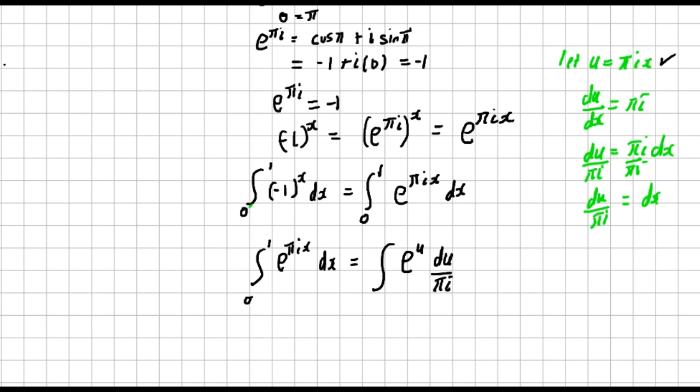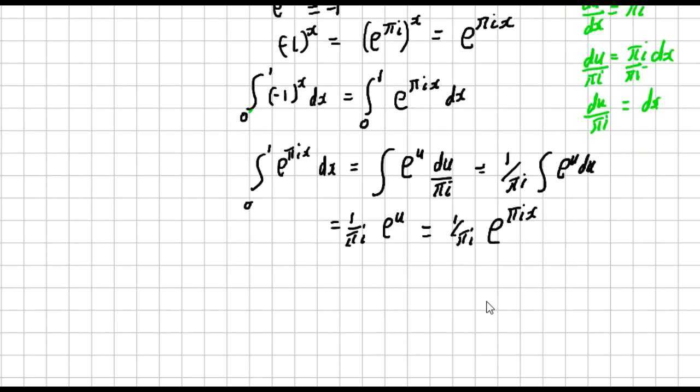So πi is a constant, you can factor that outside. You have 1 over πi, then the integral of exponential u du. If you integrate exponential u, that is a standard function, it remains exponential u. So we have 1 over πi exponential u. And remember u, you substitute back the value of u. U was πix. So this is you get 1 over πi exponential πix.